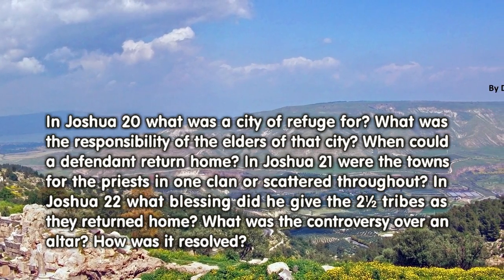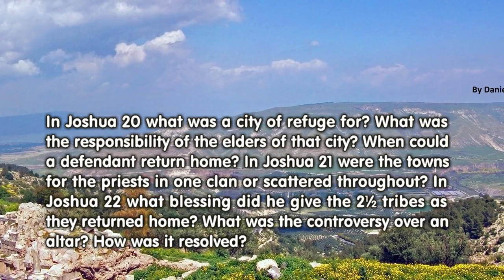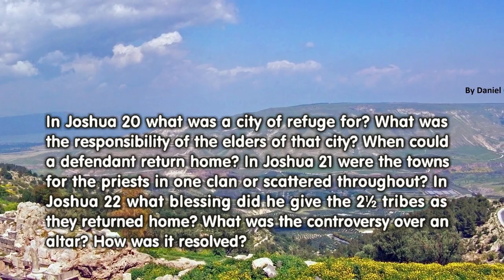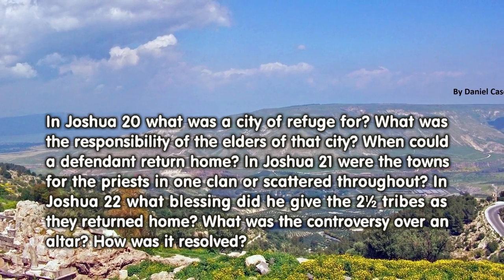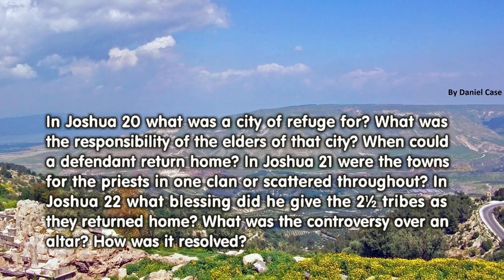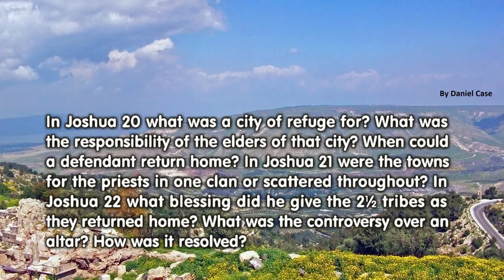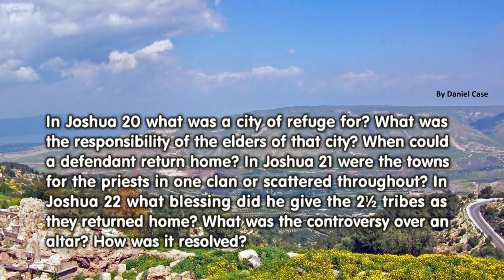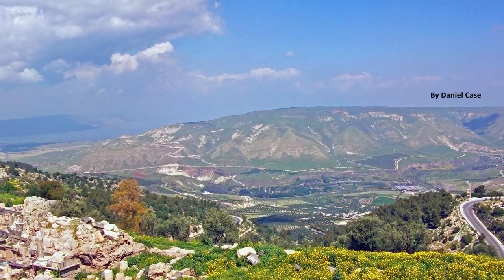In Joshua 22: What blessing did Joshua give the two and a half tribes as they returned home? What was the controversy over an altar? How was it resolved?